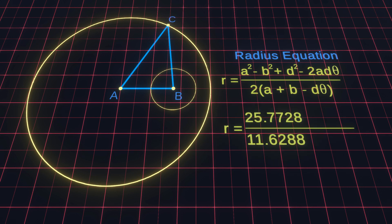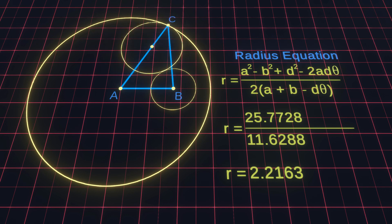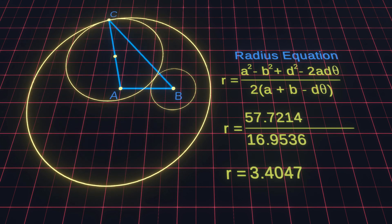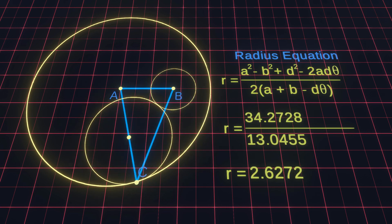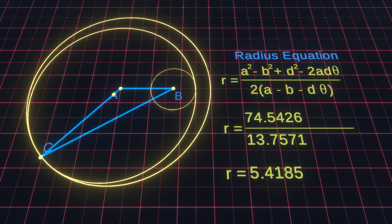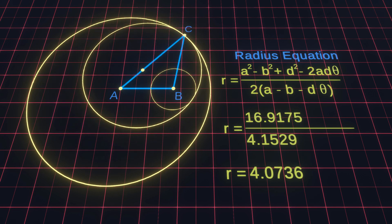This results in 25.7 divided by 11.6, which gives 2.21 as the output radius. Now that we have the radius of the tangent circle, finding the position is easy. We simply use the same degree we used for calculating point C, but instead of using the radius of the outer circle we subtract the radius of the tangent circle from that, resulting in the correct position. Once implemented, we are able to find the tangent circle in all directions. The circle will take the closest tangent of the inner circle, but we can also change this to respect the tangent on the other side by changing A plus B in the equation to A minus B.